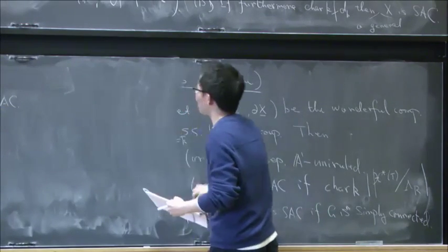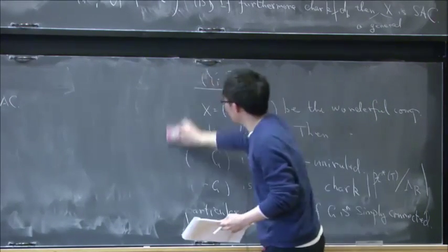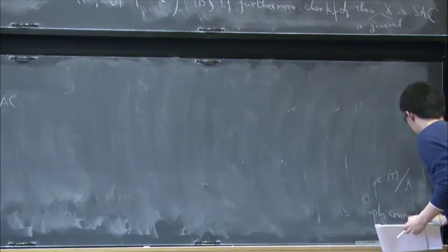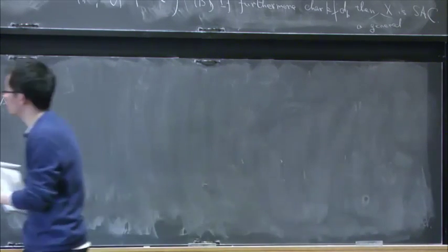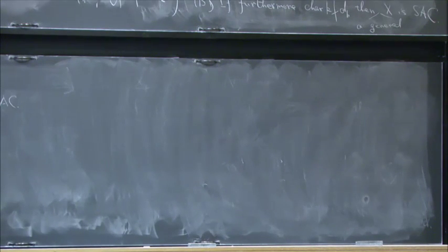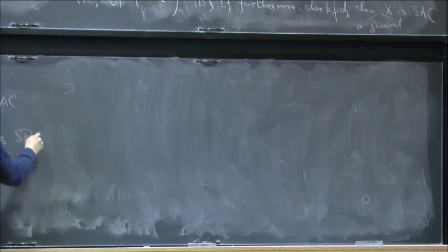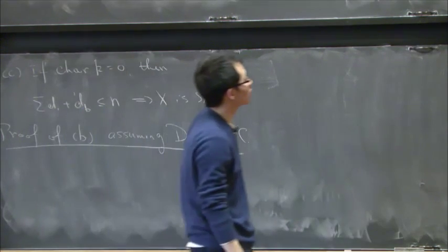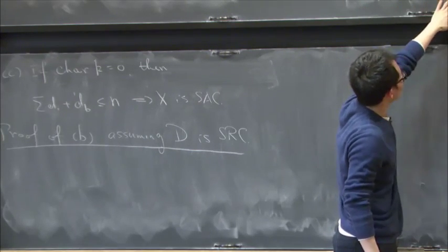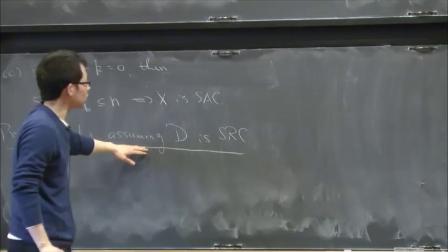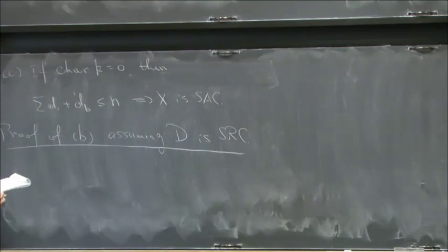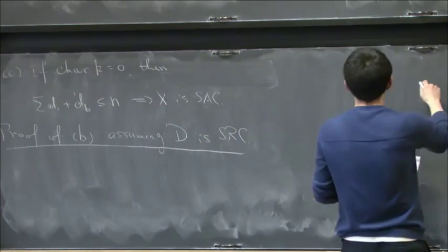So I just want to give you an idea how to prove B using the degeneration method. Assuming D is SRC. I'm not going to give you a complete proof of this one. It relies on several reduction arguments, but I want to give you a sense how to construct an A1 curve under the assumption that the Fano variety D, but it's one dimension lower. Assume that one is SRC. Then how are we going to prove this? So the idea is simple.